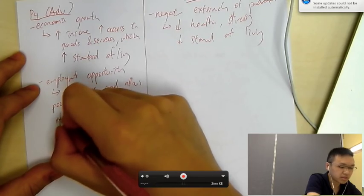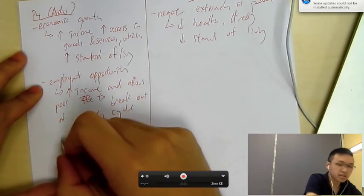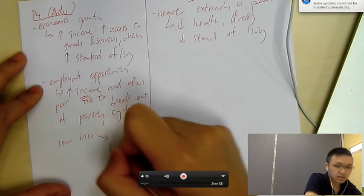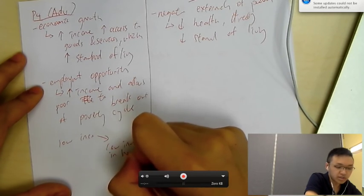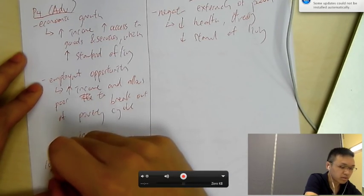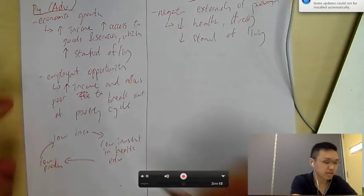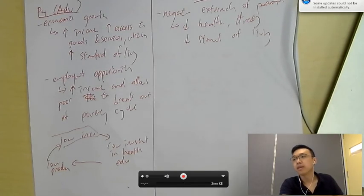I'm sure you've learned about the poverty cycle, right? So, we don't remember. Poverty cycle is low income, low investments in health and education. So, these poor households, they don't invest much in health and education, which leads to low productivity, not so productive, leading back to low income. So, if you increase, if you give them a job, they can raise their income and help them to break out of the poverty cycle.